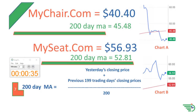Now let's take a look at MySeat.com on chart B. MySeat.com has a stock price of $56.93 and a 200-Day Moving Average of $52.81, so it is currently above the 200-Day Moving Average.